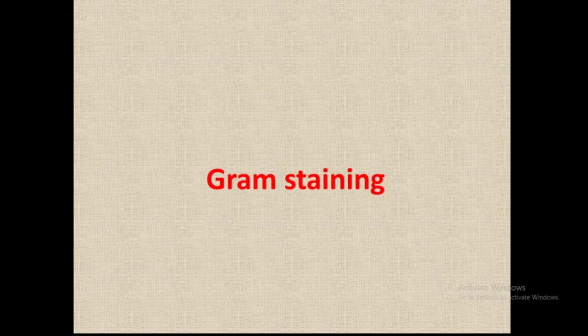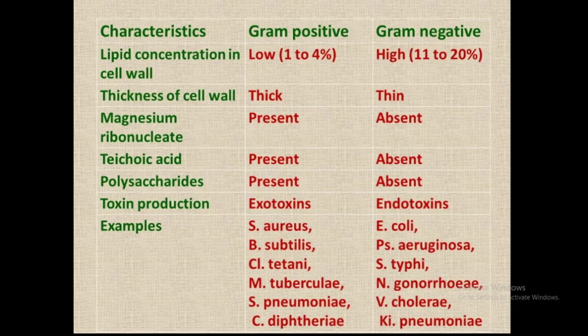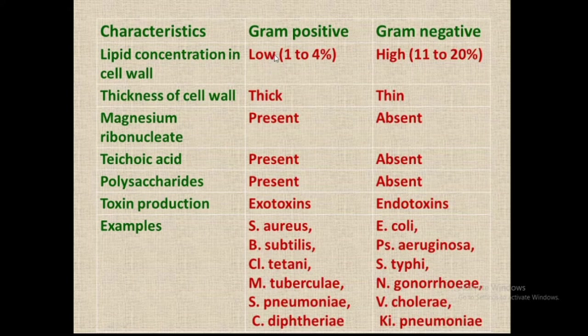Next is gram staining. This is used to differentiate between gram positive and gram negative bacteria. We will compare these bacteria based on various characteristics. First, lipid concentration in the cell wall: gram positive bacteria have low lipid concentration, whereas gram negative have high lipid concentration. The cell wall is thick in gram positive bacteria and thin in gram negative.